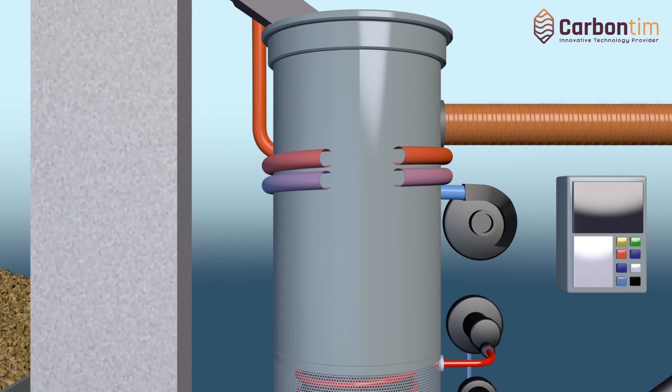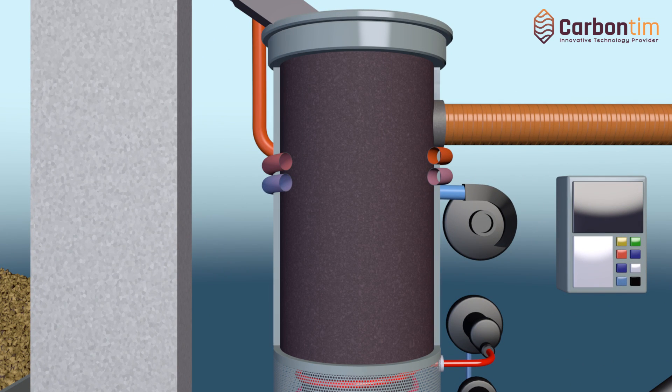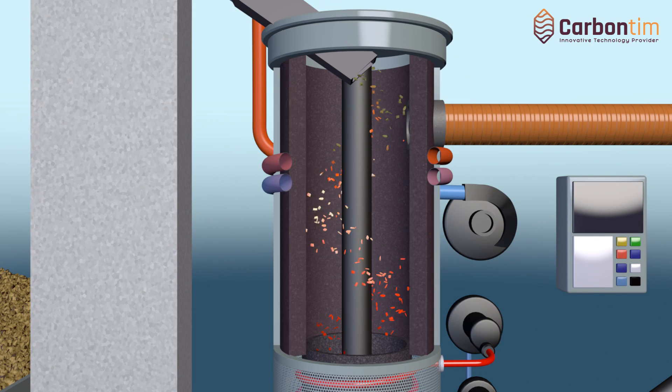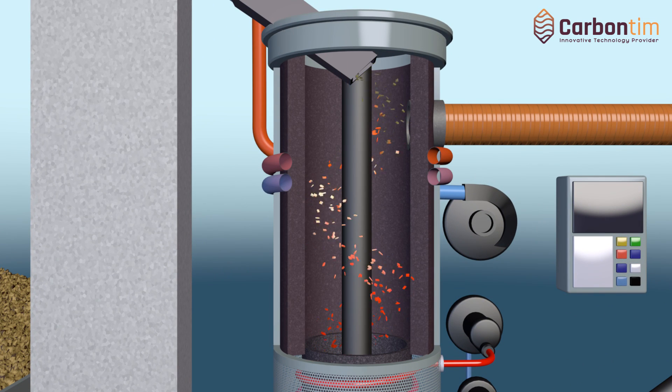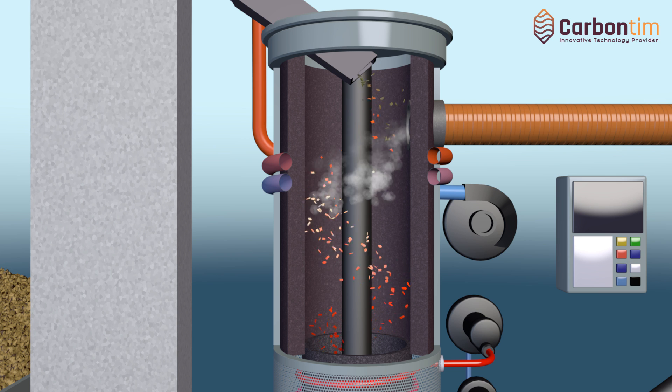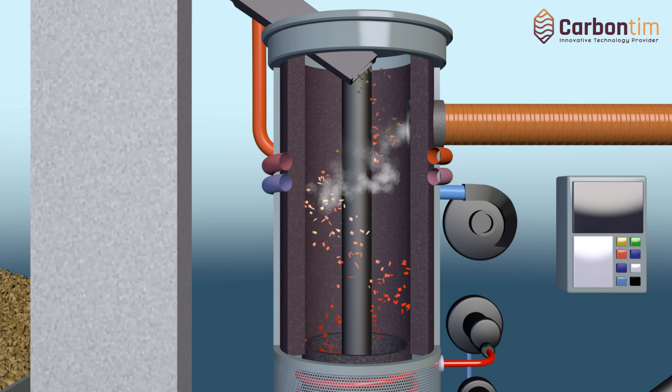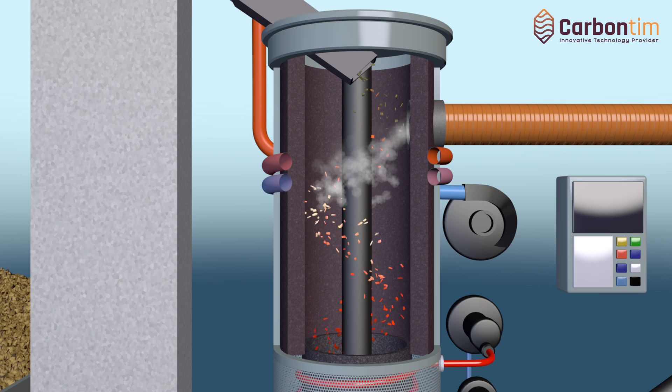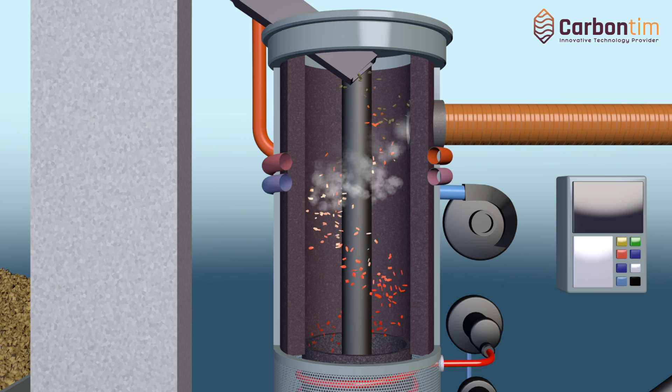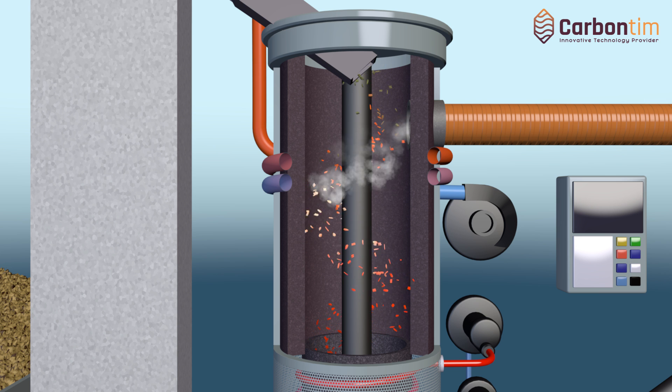Biochar production. Pre-dried and pre-heated biomass then goes to the pyrolysis reactor where the following four processes take place.